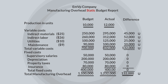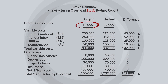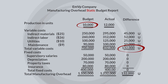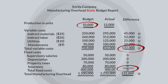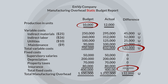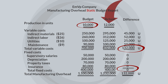Using the figures from the master or static budget, which are based on the original activity level of 10,000 units, the actual variable cost exceeded budgeted amounts by $132,000, which is unfavorable. Fixed costs were exactly as budgeted. The static budget gives the impression that the company did not control its variable costs. However, the static budget did not give consideration to the fact that the company produced 2,000 more units than planned.